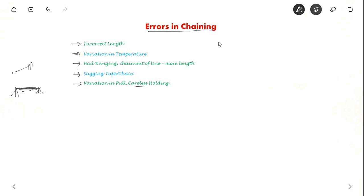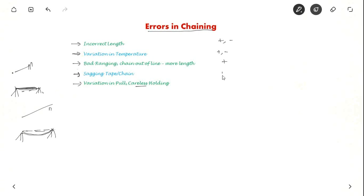Incorrect length error can be positive or negative. Variation in temperature can also be positive or negative. But bad ranging always gives more measured length, so the error is always positive. Similarly, in sagging tape you always measure more length than required, so again the error is positive. Variation in pull or careless holding can be positive or negative depending on how you do it. So these are the error signs.